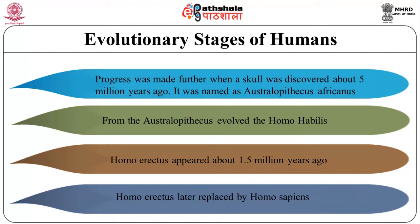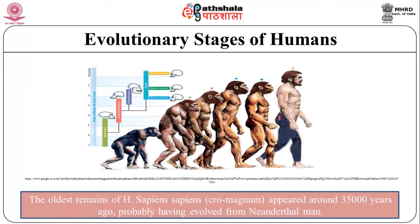Homo erectus was later replaced by Homo sapiens. There were several subspecies of Homo sapiens, a widespread one being Homo sapiens Neanderthalensis, the Neanderthal man. The Neanderthal man, a large-brained game hunter with a brain size of 1400 cc, lived in the Near East and Central Asia between 10,000 to 40,000 years back. They used hides to protect their body and buried their dead. The oldest remains of Homo sapiens sapiens, Cro-Magnon, appeared around 35,000 years ago, probably having evolved from Neanderthal men. They had a large brain of about 1500 cc and existed as hunter-gatherers in cooperative bands. They were stout and short, used hides for clothing, built huts and buried their dead.